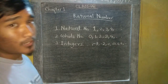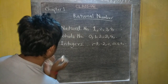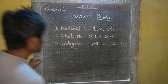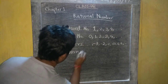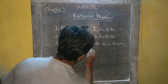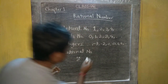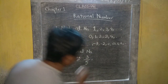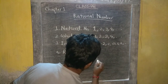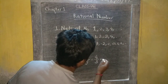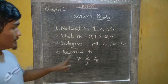So this number of numbers is a rational number. For example, if I mean fractionally, 3 by 5, similarly 4 by 3, etc. So it will be called a rational number.